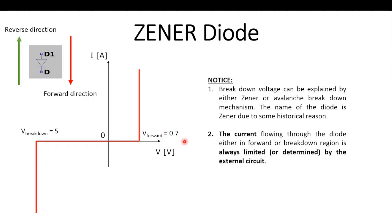Why don't they use the forward region? In my opinion, the forward voltage is really small — around 0.6 to 0.7 volts — and with such a small voltage you cannot drive any load. But with a voltage around 3.6 or 5 volts it would be good for electronics circuits. That's why I think they prefer to use the breakdown voltage, but please verify this — it's only my opinion.